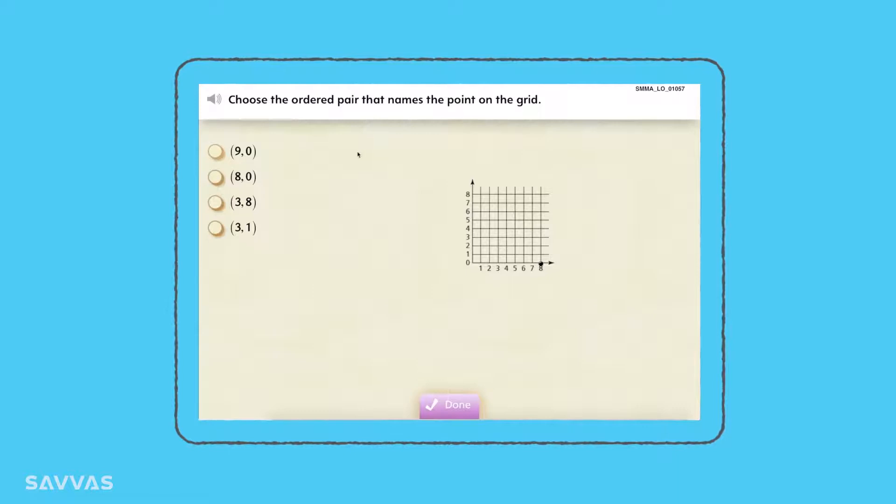Still struggling? If students continue to have difficulties, SuccessMaker automatically serves up a prerequisite learning objective that reinforces the underlying concept in the problem they are trying to solve.